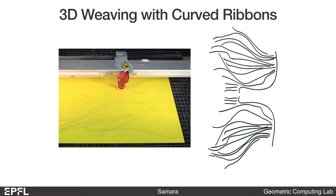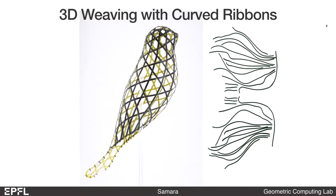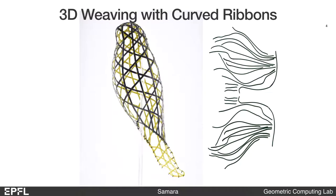In this case, if we fabricate the set of planar ribbons shown on the right, we can weave them to get this bird. This is one of the example outputs of our framework.